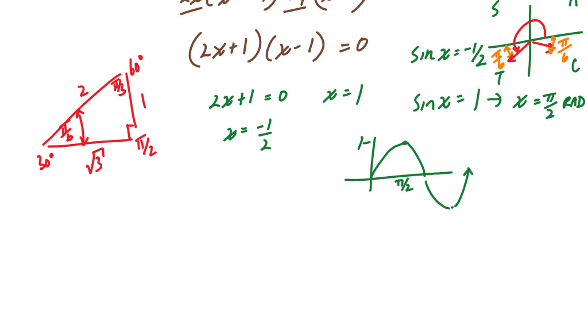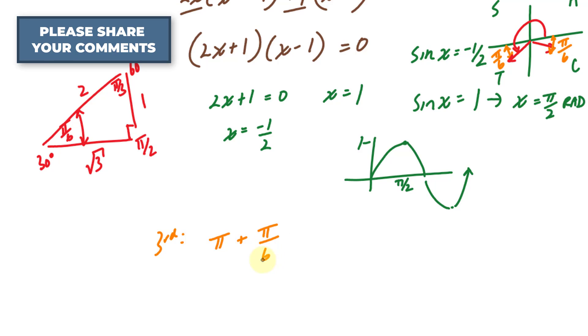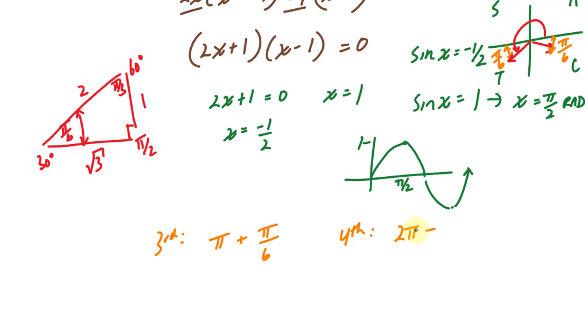To find angles, after finding the reference angle in the third quadrant, you take pi, this is for the third quadrant, and you add it to pi over six. For the fourth quadrant, you take two pi, and subtract it from your reference. This gives us two answers. Adding pi plus pi over six is seven pi over six. Subtracting pi over six from two pi gives you eleven pi over six. And there you have it.